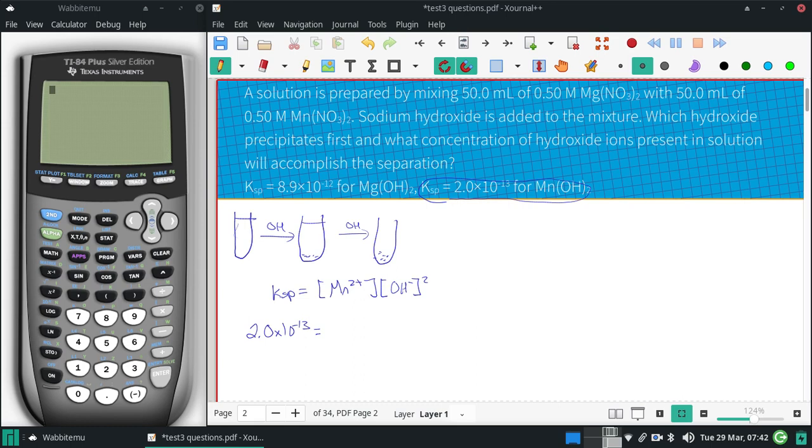The manganese is not 0.50 molar because we've mixed 50 milliliters with the 50 milliliters. So we kind of have like a C1V1 equals C2V2 thing going on, so it would be 50 milliliters of 0.5 molar equals 50 milliliters plus 50 milliliters.